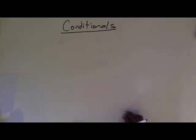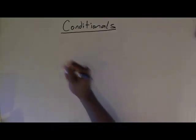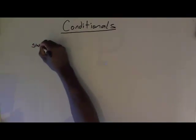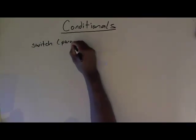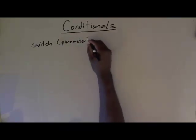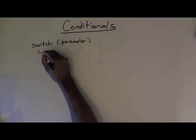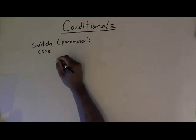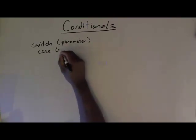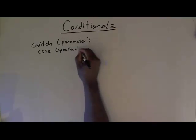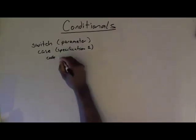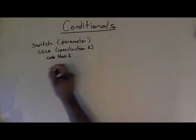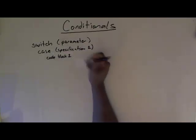What the switch statement allows us to do is make a choice from a selection — it almost looks like a menu selection. The general template is: switch, then you have some parameter that you're making a decision on. Then you have cases, each with some kind of specification. If this parameter matches this specification, then this code block is executed.